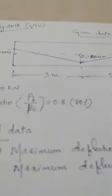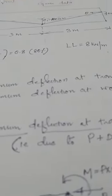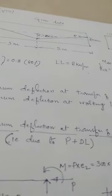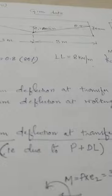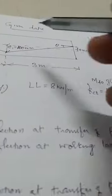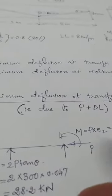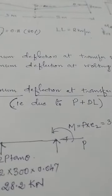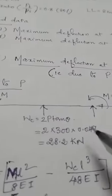Since a triangular cable profile is used, both a moment M and a point load Wc are created by the prestress. The prestress will create two deflections — one due to M and one due to Wc. Dead weight also creates a deflection, as does the live load of 8 kN/m. The required output is: (i) maximum deflection at transfer of prestress, i.e., due to P and dead load.